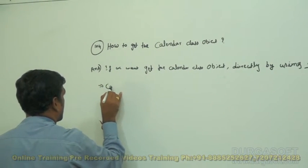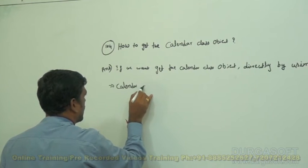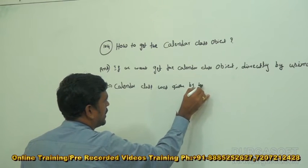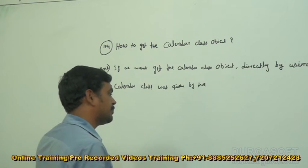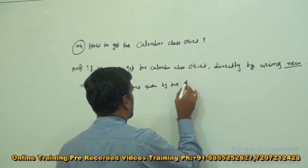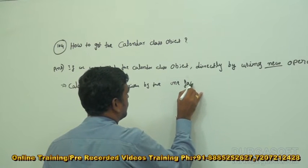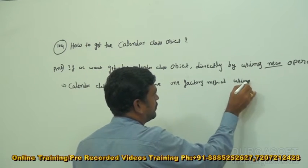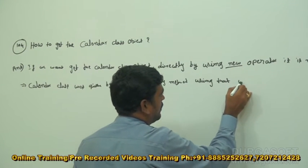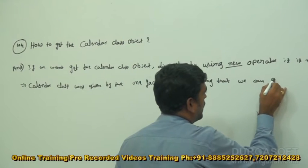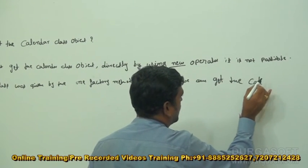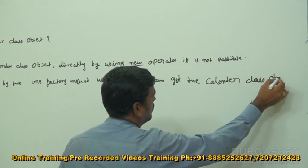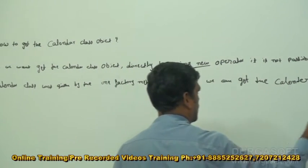Calendar class provides one factory method. Using that factory method, we can get the Calendar class object.